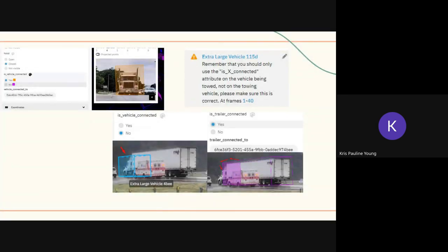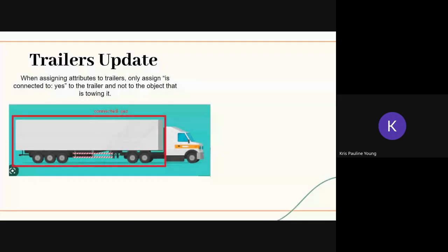When we are connecting the vehicles and the trailers, the vehicle should always be marked as no, so the vehicle is not connected to the trailer. However, the trailer needs to be marked as yes, meaning the trailer is connected to the vehicle. So in case that was confusing, do not connect your tow trucks to the trailer, but connect your trailer to the tow truck. It's just kind of a one-way thing here. This is another visual example of that where we connect the trailer to the truck, and then the truck we can just mark it as not connected.